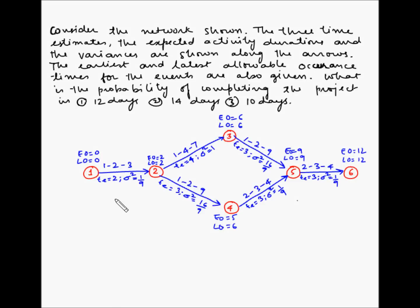Consider the project network shown. In this network, the activities are shown in the form of an arrow and are shown in blue color, while the events are shown with red color in the form of nodes. The 3 time estimates, the expected activity durations, and the variances are shown along the arrows.